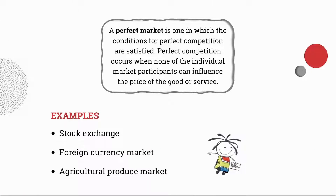So what sets the perfect market apart from the imperfect market? The first defining characteristic is that perfect competition must be present. Perfect competition refers to a situation where no one supplier has any more market influence than their fellow competitors. Every single supplier in the perfect market is equally represented, and neither of the suppliers can influence the price of the good or service.